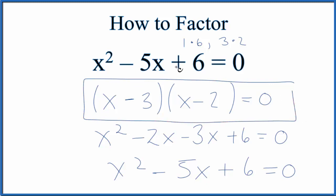If you wanted to check, you could try the factors 1 and 6, but that actually doesn't work out - it won't give you this equation here. This is Dr. B with how to factor x squared minus 5x plus 6 equals 0. Thanks for watching.